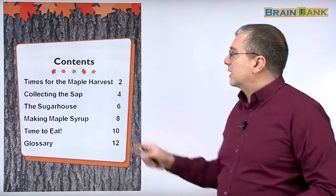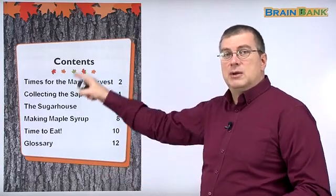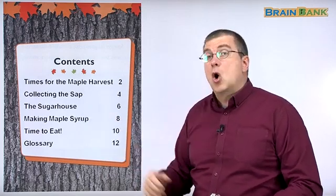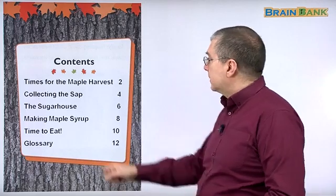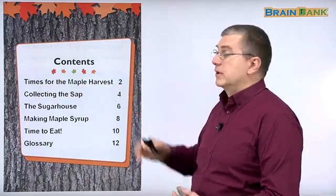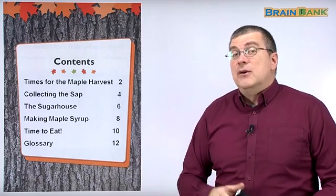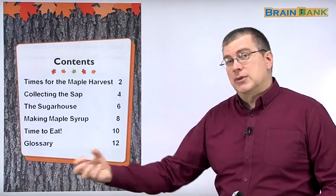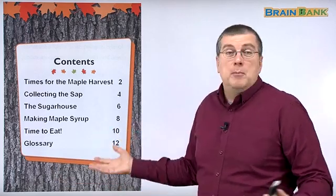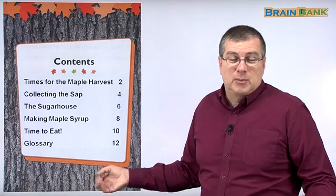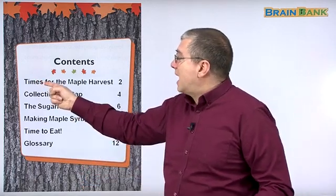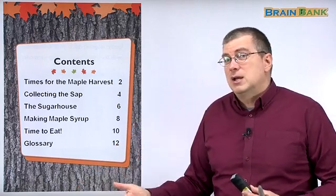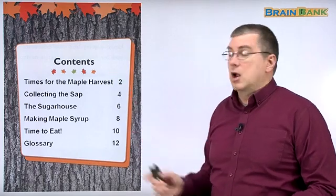So when we learn about this subject, these are the contents — the table of contents. This is what we're going to learn in this lesson. Let's go over it together. Times for the maple harvest. Remember, I gave you the example — farmers go into the field in the fall, in the autumn, to get the rice or to get the corn. But what about maple syrup? What about the maple harvest? There will be times. What time do they go? Do they go in the fall? Do they go in a different time of the year? We'll find out in this chapter on page two.